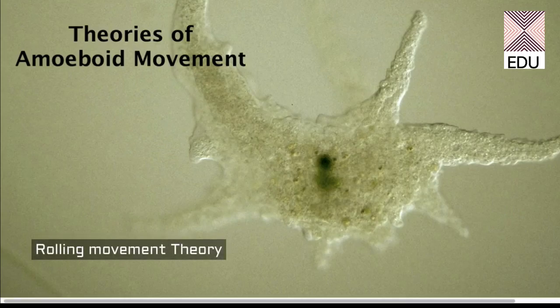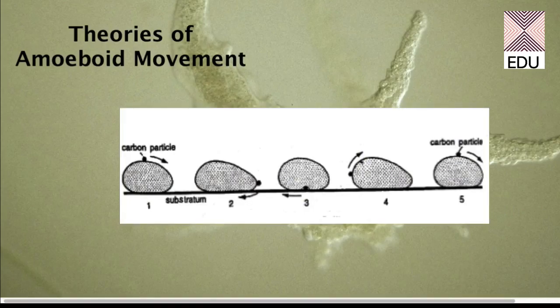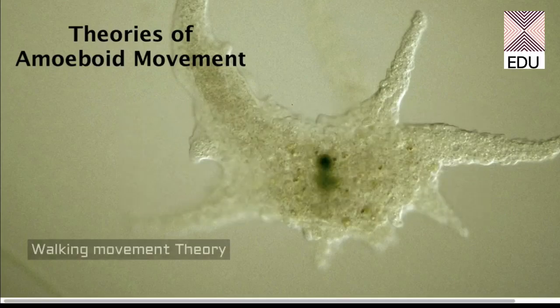The third theory is the rolling movement theory, given by Jennings in 1904. This theory states that amoeba is rolling just like a ball. If we put a drop of some stain on amoeba, it can be seen rolling just like a football in water.